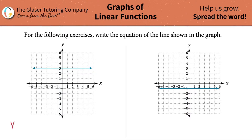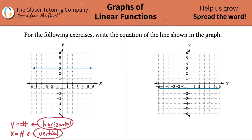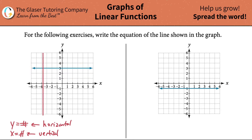When y equals some constant, that's always the condition for a horizontal line. If x equals some constant number, that's the form for a vertical line. And by the way, I'm talking about perfectly horizontal or perfectly vertical — so it has to be either flat, like we have here, or directly up and down like that.